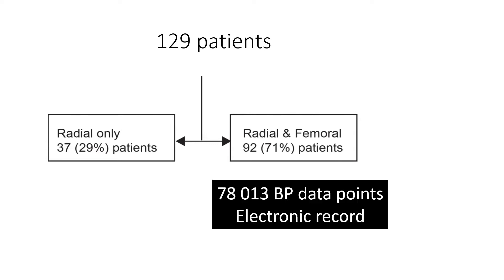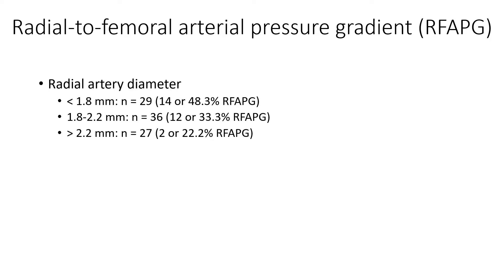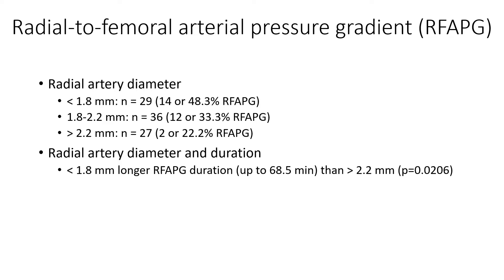We had a total of 78,013 blood pressure data points on the electronic record. In patients with a small radial artery diameter less than 1.8 mm, 48.3% had a significant radial-femoral arterial pressure gradient. Diameters between 1.8 and 2.2 mm were associated with 33% gradient prevalence, and those more than 2.2 mm had only 22%. Patients with a smaller radial artery diameter less than 1.8 mm had a longer duration of the gradient than those with a diameter more than 2.2 mm.